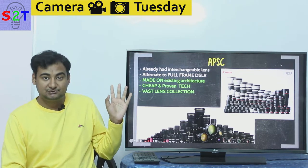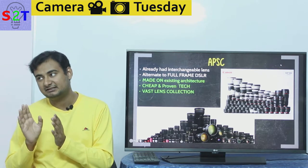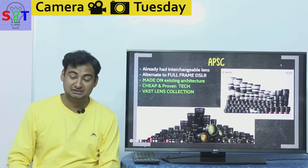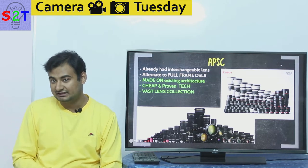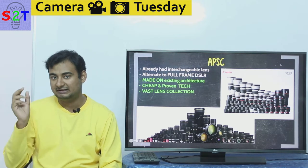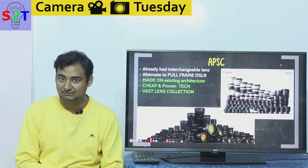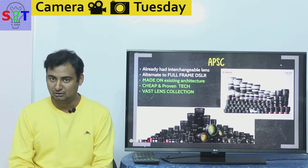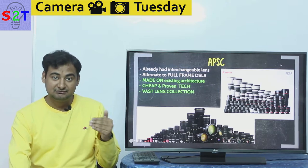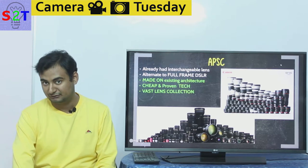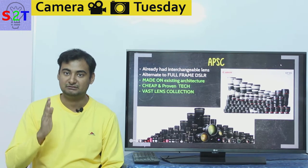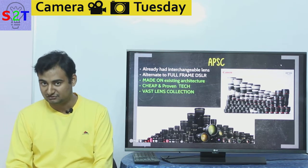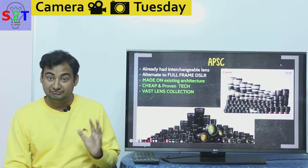APS-C was created as a full-frame alternative, not as competition to point-and-shoots — it was made to compete with professional-grade full-frame DSLRs. It was built on existing architecture: sometimes if you opened up the electronics they were exactly the same, with only the processor reduced since megapixel counts were very low — around three to four megapixels. The APS-C sensor was smaller but everything else was the same, so autofocus worked flawlessly. The only compromise was the crop factor: field of view multiplied by 1.6x, and effectively aperture also multiplied by 1.6x.